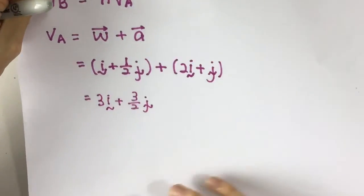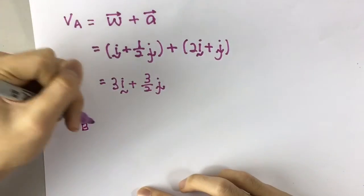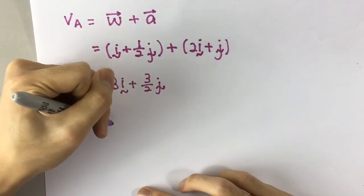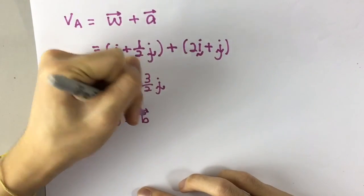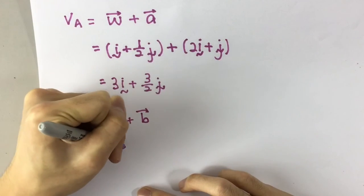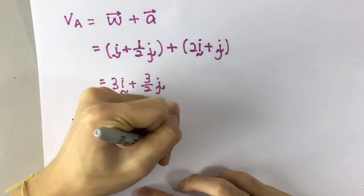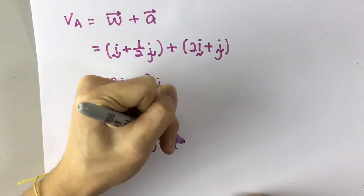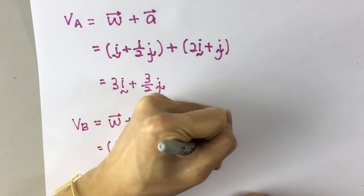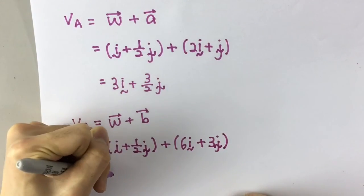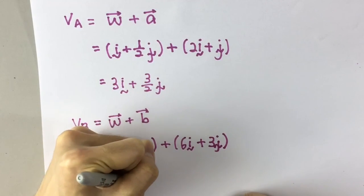Alright, how about for boat B? I'll call it VB. For VB, it's affected by water again, plus its own velocity. So that's I plus 1 over 2 J plus, now the velocity of boat B is 6I and 3J. So that should give you 7I plus 7 over 2 J.